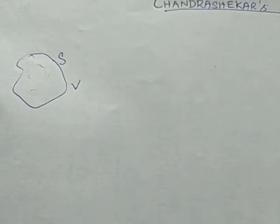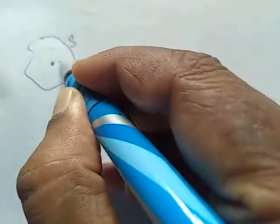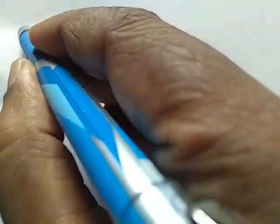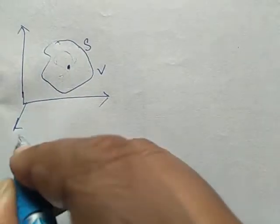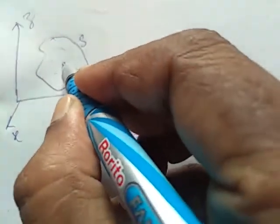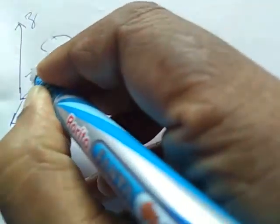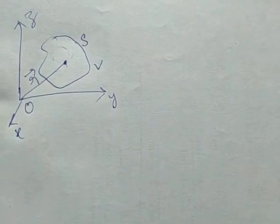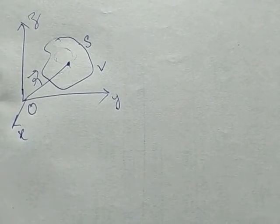We have to prove this. We are considering some region enclosed by a volume V and a point on it. For reference, we are considering a Cartesian coordinate axis: X, Y, and Z. For this point we have a position vector R joining the point with the origin. We are considering a position vector R of a fluid element with respect to the origin.